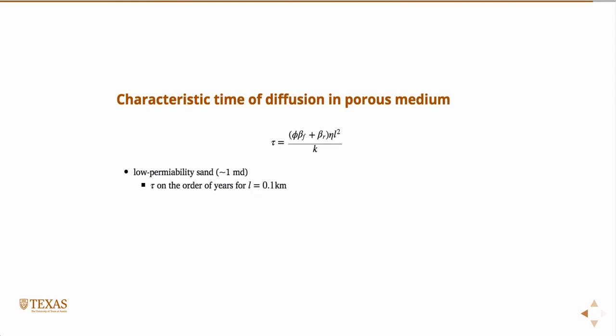For a low permeability sand which has one millidarcy, then tau is on the order of years for L equal to 100 meters. 100 meters could be a reasonable size of a cap or sedimentary isolation. So on the order of years, so it only took a few years for the pore pressure to equilibrate. In that case it's just going to be well-connected and you're going to see hydrostatic pressures. However, in a low permeable shale which has 10 nanodarcy, tau is on the order of 100,000 years for 100 meters, which is sort of what we know.